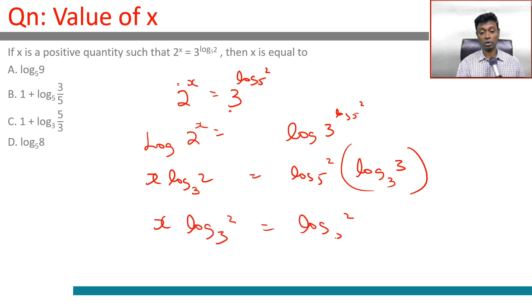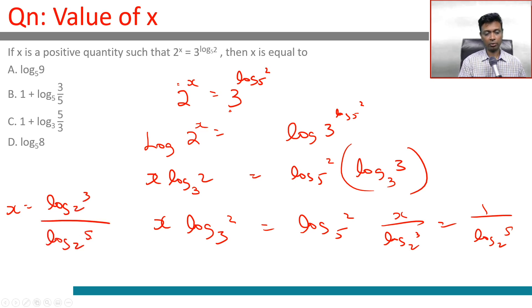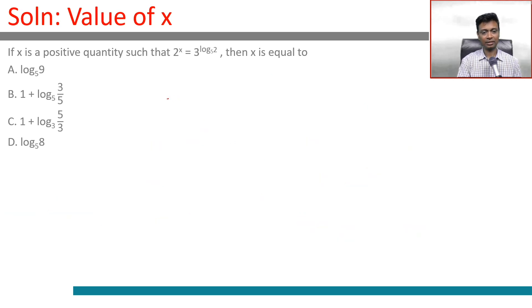Or x divided by log_2(3) is 1 divided by log_2(5). Or x is log_2(3) divided by log_2(5). In other words, our number x is log_5(3).